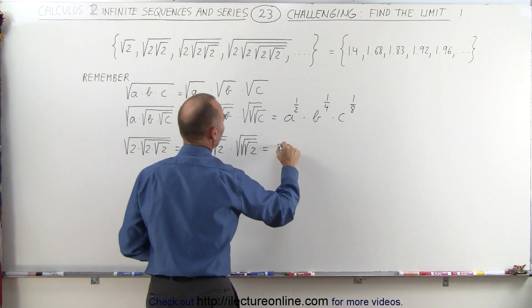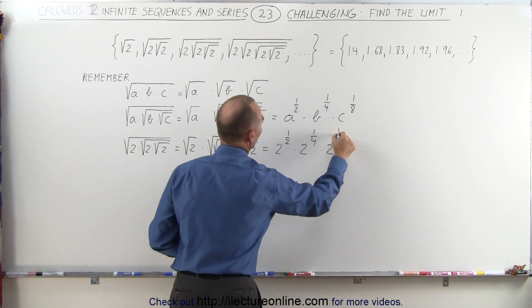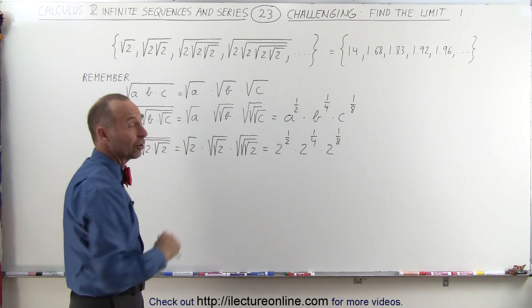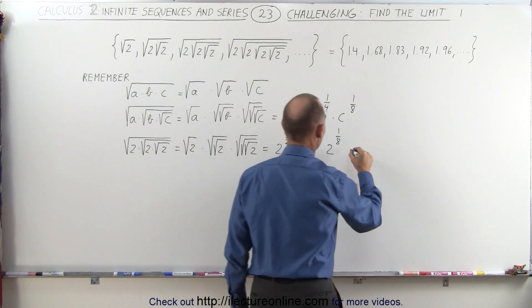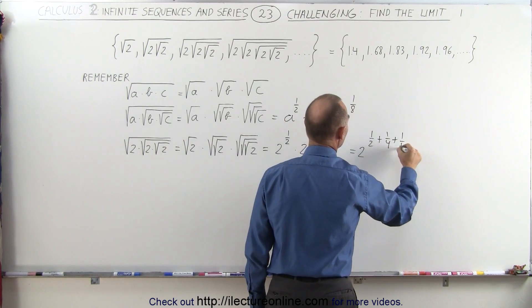which is equal to 2 to the one-half power times 2 to the 1 quarter power times 2 to the 1 eighth power. And since in this case all the bases are the same, you can write this as 2 to the 1 half plus 1 quarter plus 1 eighth power.